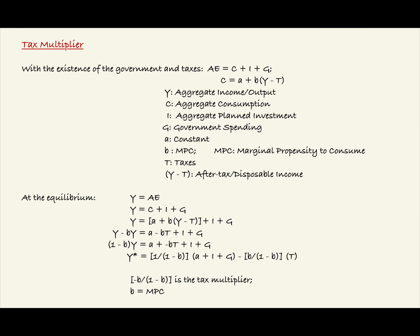With the existence of the government and taxes, we have AE equals C plus I plus G. We can define consumption as A plus B times the quantity of Y minus T.